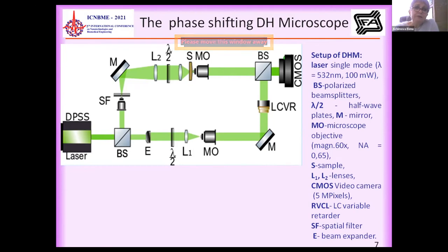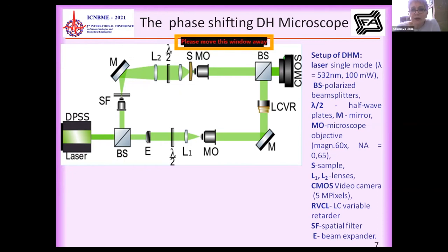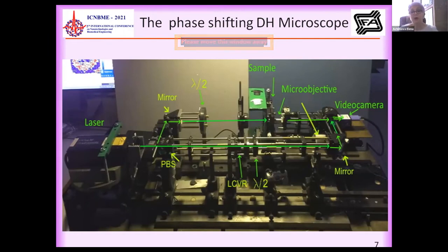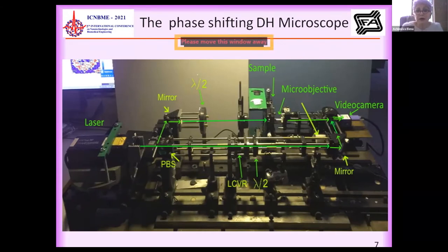This provides high stability of the system, and accuracy of the phase shift applied to the reference beam. All components were mounted on a cage system, which makes our microscope rigid, reduces vibration, and increases the accuracy of the images obtained.